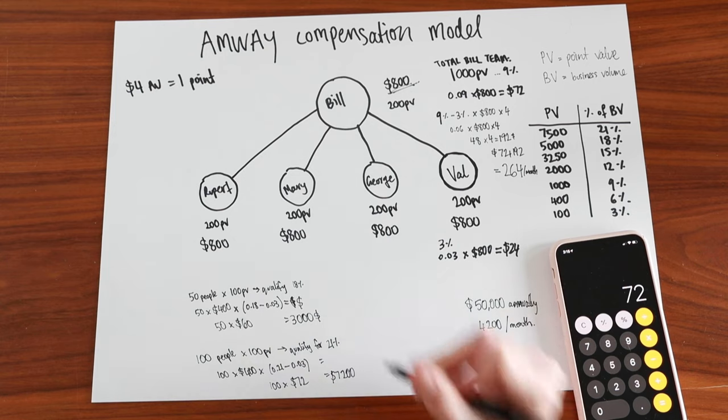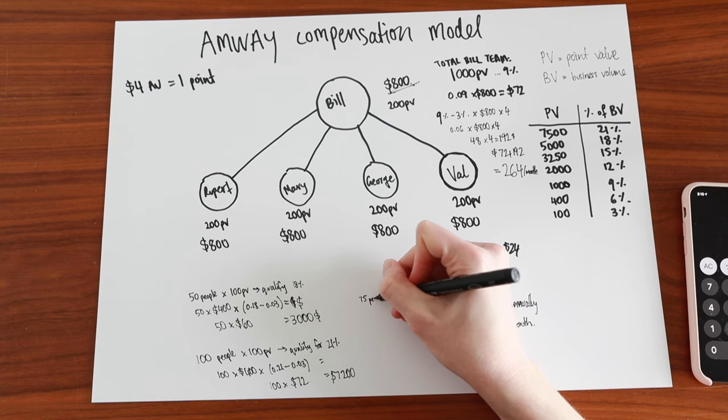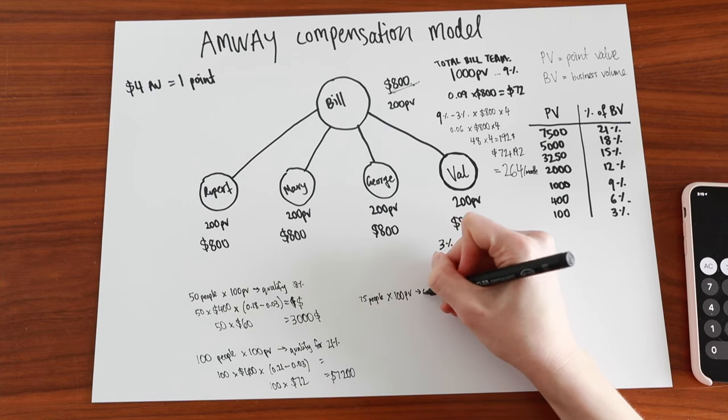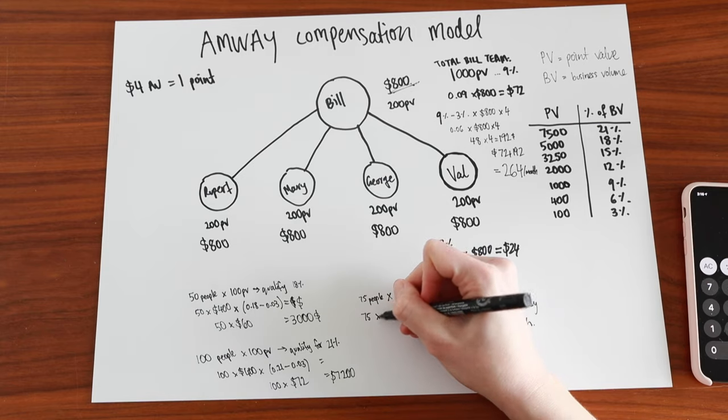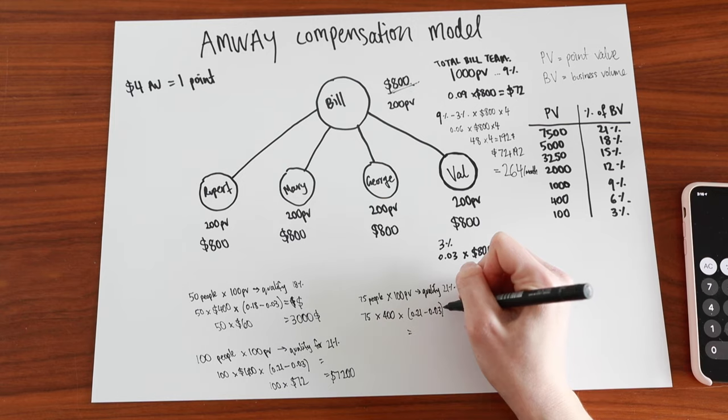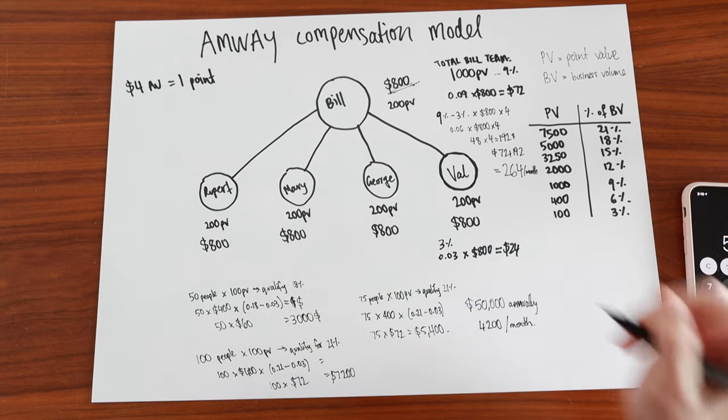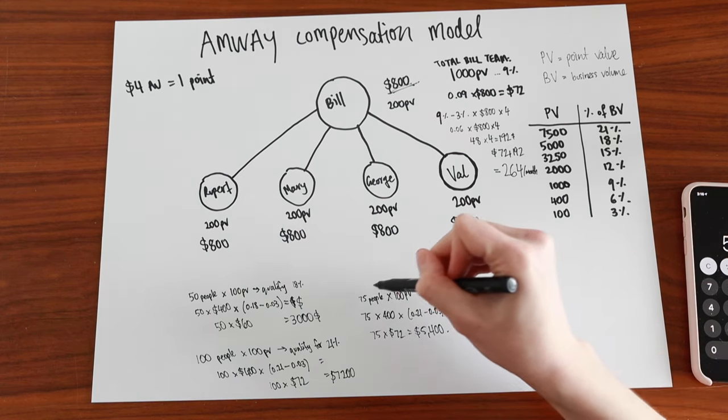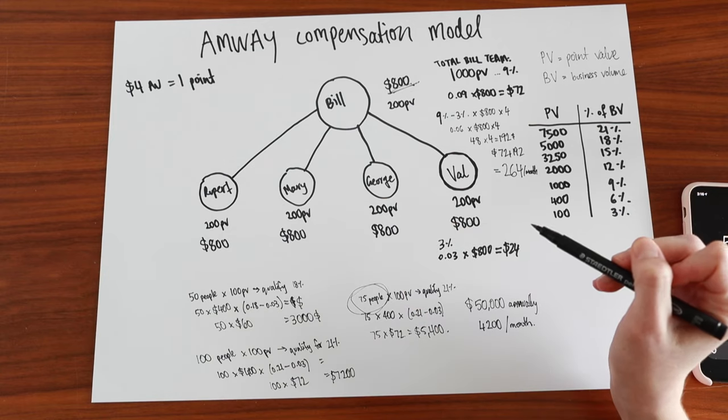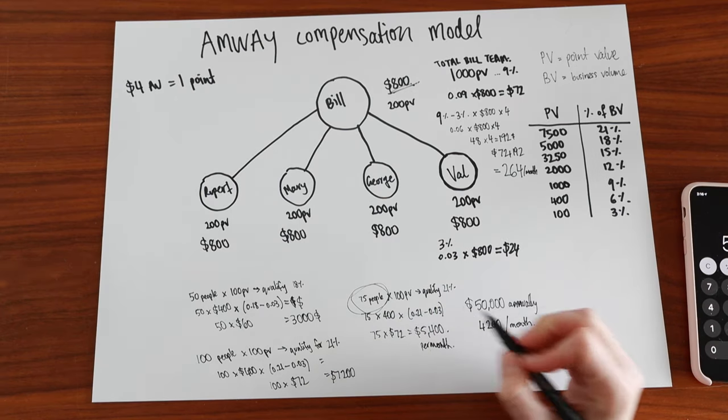$7,200 per month. Okay, well, it's somewhere in between. So let's say 75 people. $5,400. So you would need to recruit 75 people each spending $400 per month on Amway products to earn $5,400 per month. That's a lot of people.